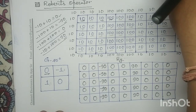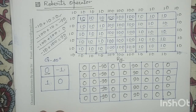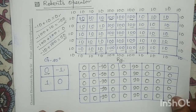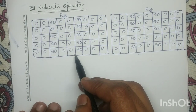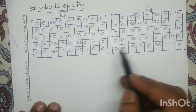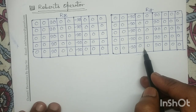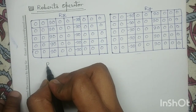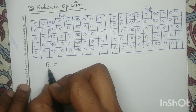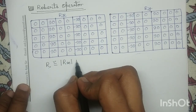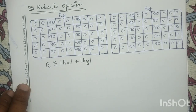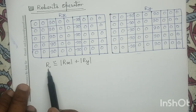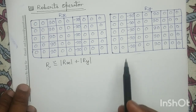After determining the response due to the plus 45 degree mask (Rx) and the minus 45 degree mask (Ry), our next step is to determine the magnitude matrix for this Roberts operator. The magnitude of the Roberts operator R is approximately equal to |Rx| + |Ry|. We will use the same dimension as Rx and Ry, which is 5 cross 9.